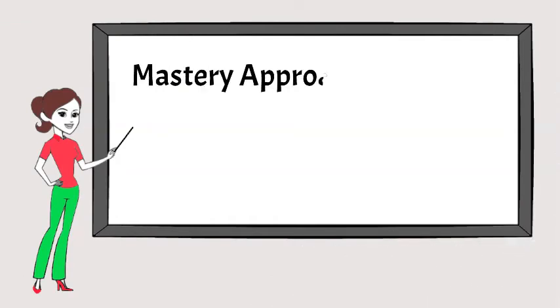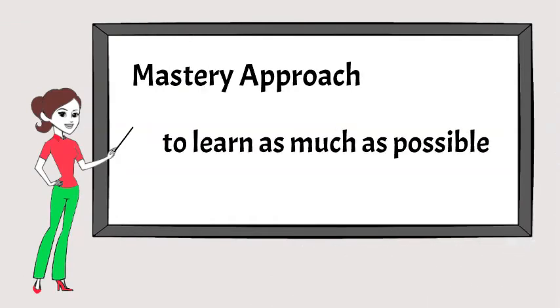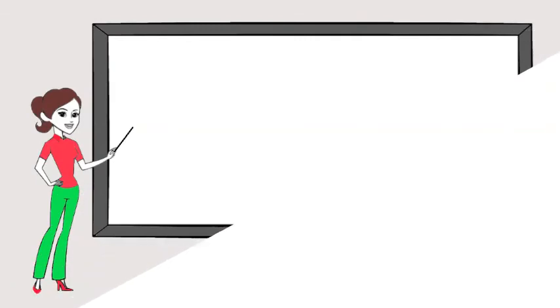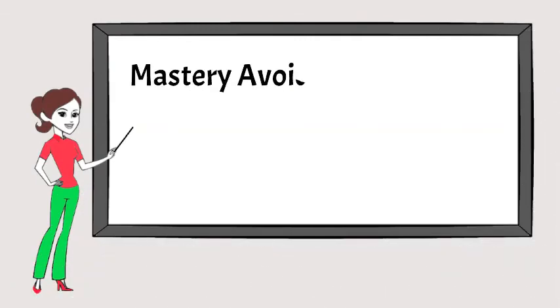Mastery approach describes the desire to learn as much as possible. Mastery avoidance describes the concern that someone won't learn as much as they need to to master the task.